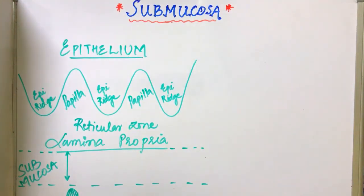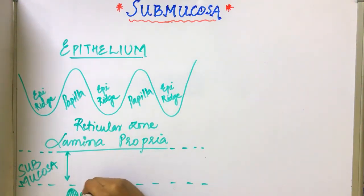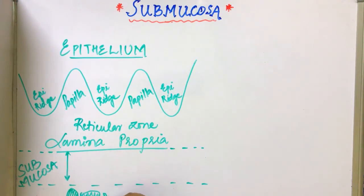Hello guys, welcome back to my channel. Today we'll be discussing about submucosa, which is present below the lamina propria. First of all, let us see the structure of the epithelium.